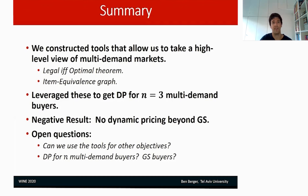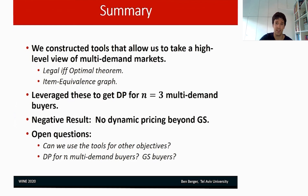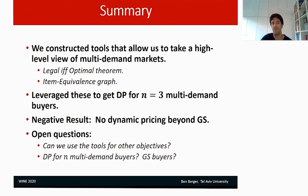To summarize: on the positive side, we constructed tools for a high-level view of multi-demand markets — the legal if and only if optimal theorem, and the item equivalence graph. These tools are valid for every number of buyers N. We leverage them to get a dynamic pricing for three multi-demand buyers. The negative result shows no dynamic pricing is guaranteed beyond gross substitutes. Open questions: whether these tools can be used for other objectives in multi-demand markets, and whether dynamic pricing is guaranteed to exist for more than three multi-demand buyers and more generally for gross substitutes buyers. Thank you very much.